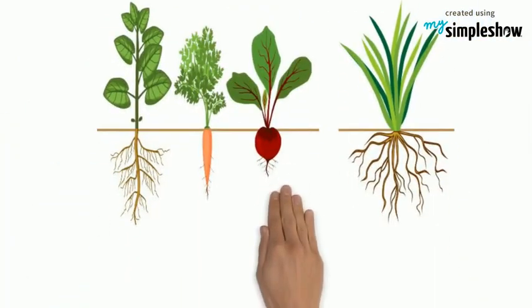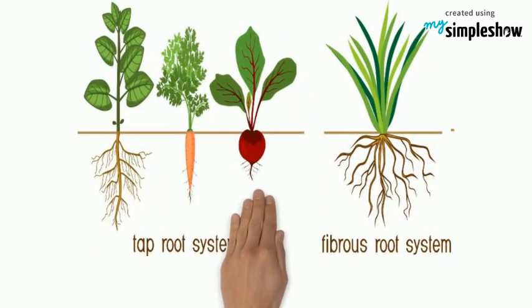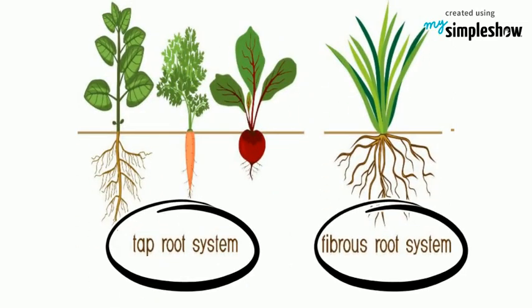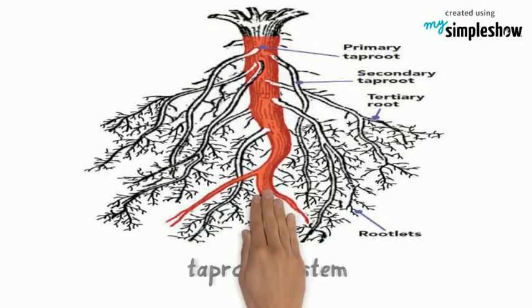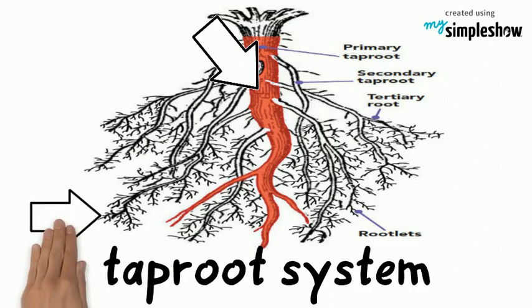All roots have almost similar functions but they vary in structure. Plants have two main types of root systems. The first is the taproot system. It has a main root that grows down vertically, from which many smaller roots grow. It goes deep into the soil.